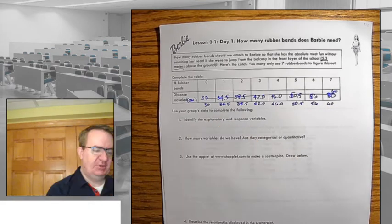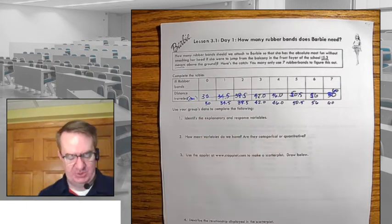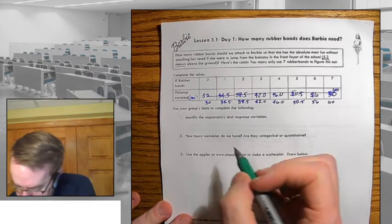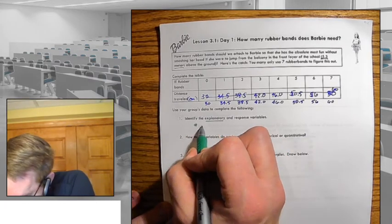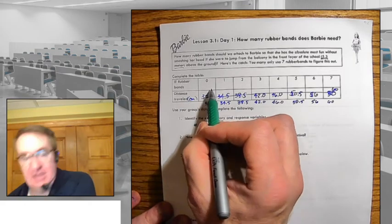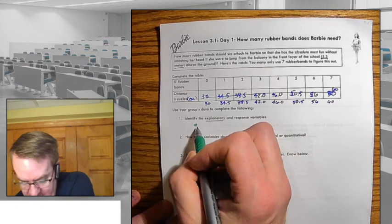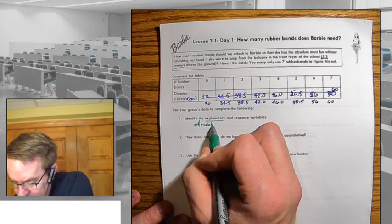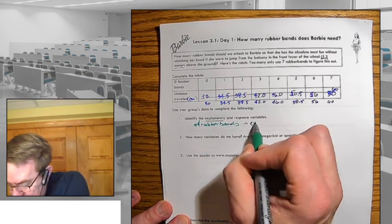And so the first thing is we're going to review some things from before: what's the explanatory variable and what's the response variable? So the explanatory variable here is going to be the number of rubber bands. Why? Partly because that's what we control. Whatever you can change is going to generally be the explanatory variable.